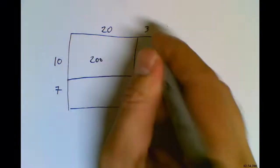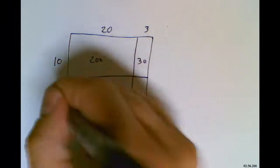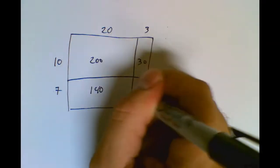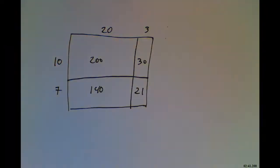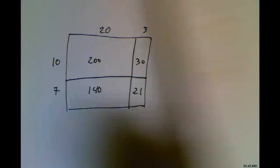20 times 10 is 200. 10 times 3 is 30. 20 times 7 is 140. And 7 times 3 is 21.